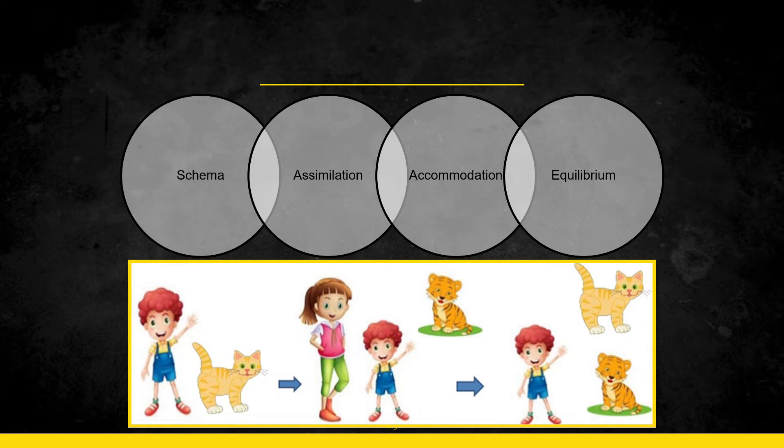Now cognition basically involves four main concepts in it which is known as the schema, the assimilation, the accommodation, and the equilibrium. Now this may seem a little hard to grasp at the beginning but stay with me and you'll get it easily.